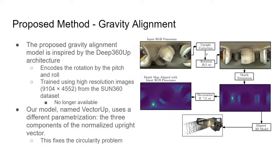Our gravity alignment model, called VectorUp, is inspired by the Deep360 architecture. The main differences are that instead of encoding the rotation by the pitch and yaw angles, we output the three components of the normalized upright vector, which fixes the circularity problem. Also, instead of using high-resolution images from the Sun 306 dataset, which are no longer available, we had to use low-resolution images.